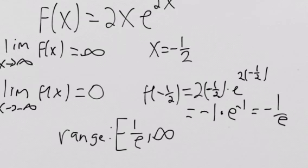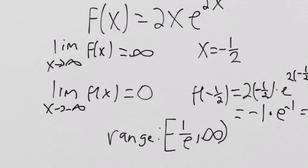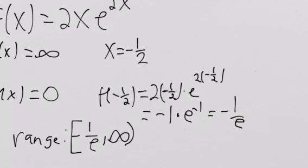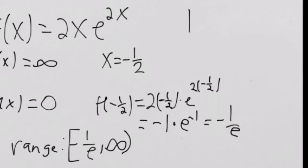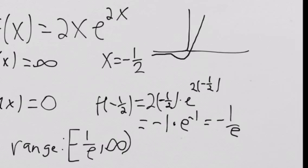The range is [-1/e, ∞) — a closed bracket at -1/e and an open parenthesis at infinity. At negative infinity the function approaches 0; at positive infinity it approaches infinity; and at x = -1/2 it dips down to -1/e. So what this will really look like is: it approaches 0 from the left, dips down, and then goes up to infinity. The minimum point is at (-1/2, -1/e), and as x goes off to the left, the y-value approaches 0. So our range goes from -1/e up to infinity.